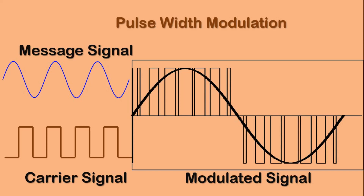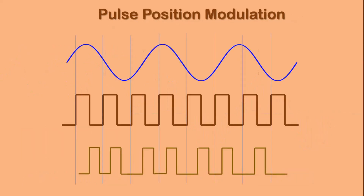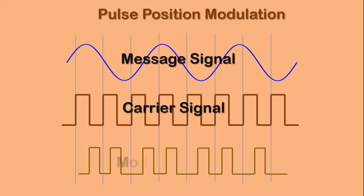Therefore, this PWM signal is said to be a trailing edge modulated signal. In pulse amplitude modulation, the width or duration of the pulse remains the same, but the amplitude of the modulated signal changes according to the message signal. In pulse position modulation (PPM), the width and amplitude remain the same, but the position of the carrier pulse changes with the change in the message signal. Based on the amplitude of the modulating signal, the position of the pulse of the modulated signal is placed.